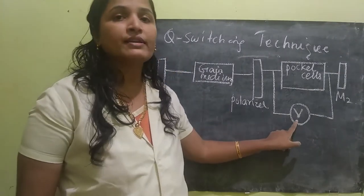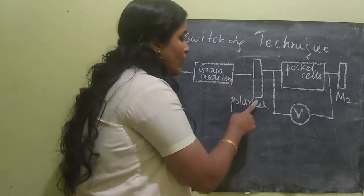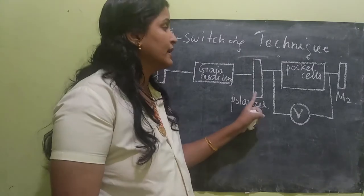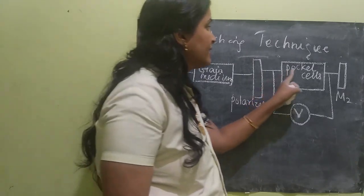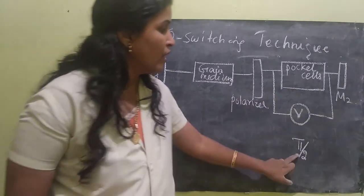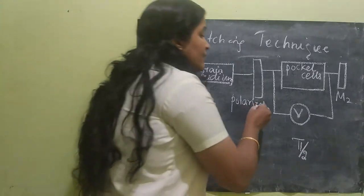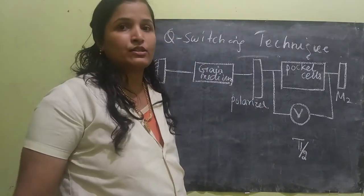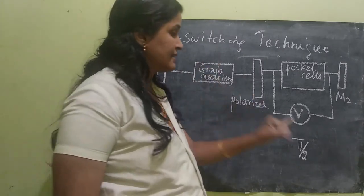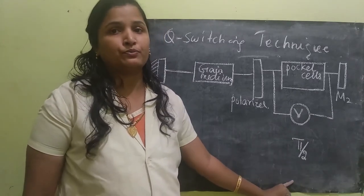When the voltage supply is given to the Pockels cell, the radiation coming out through the polarizer will be converted into linearly polarized. Then the Pockels cell will shift the linearly polarized wave by π/2 — that means a 90-degree phase shift. It will also convert the linearly polarized wave into circularly polarized. So two things it will do: convert linear to circular polarized, and change the phase by π/2.